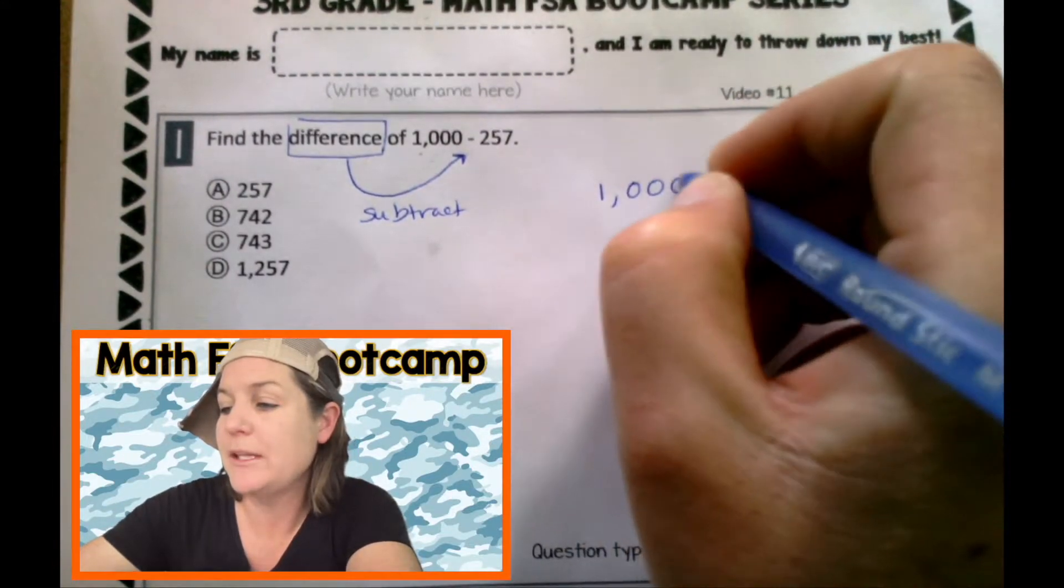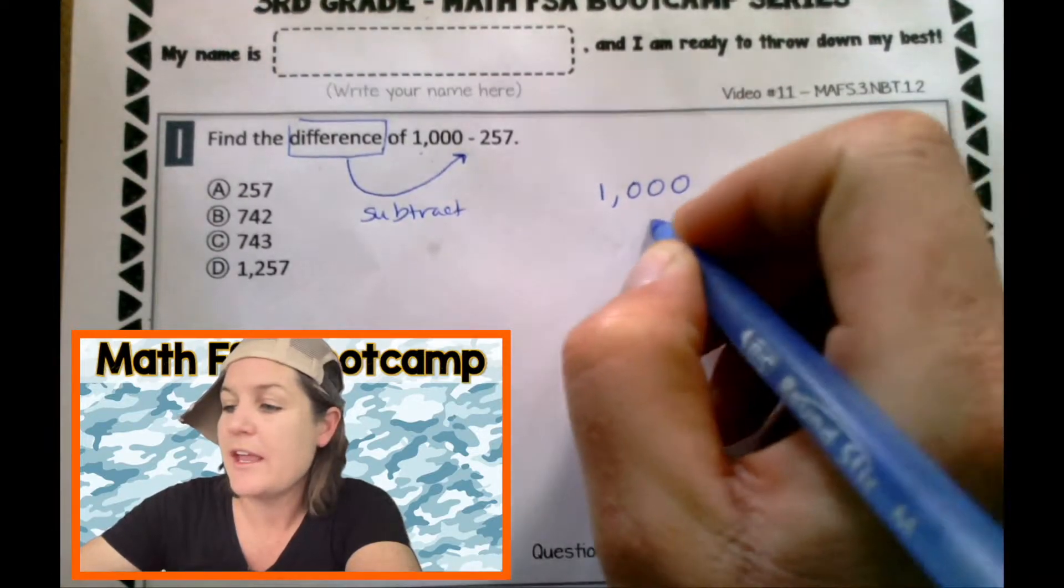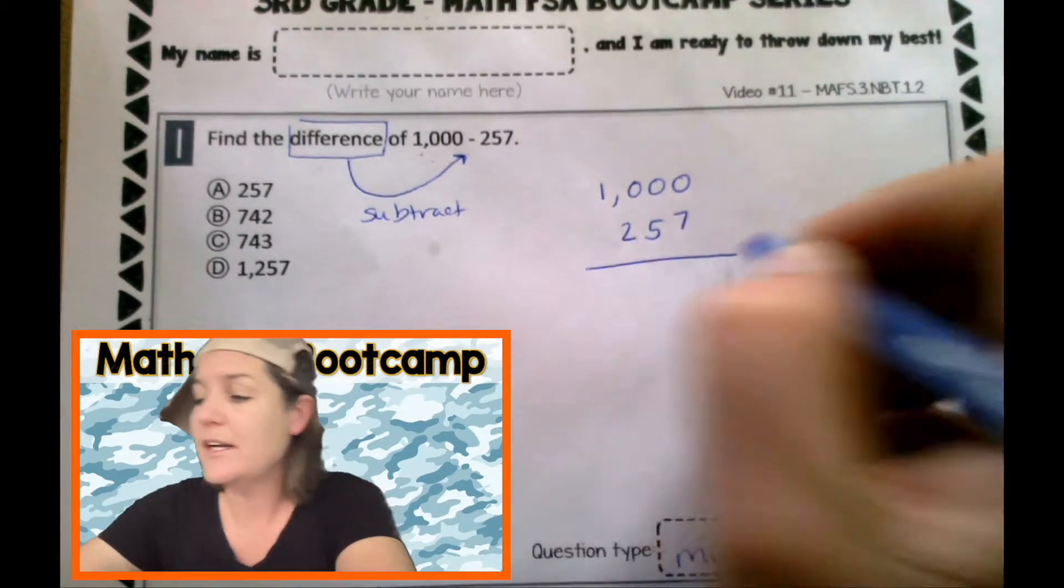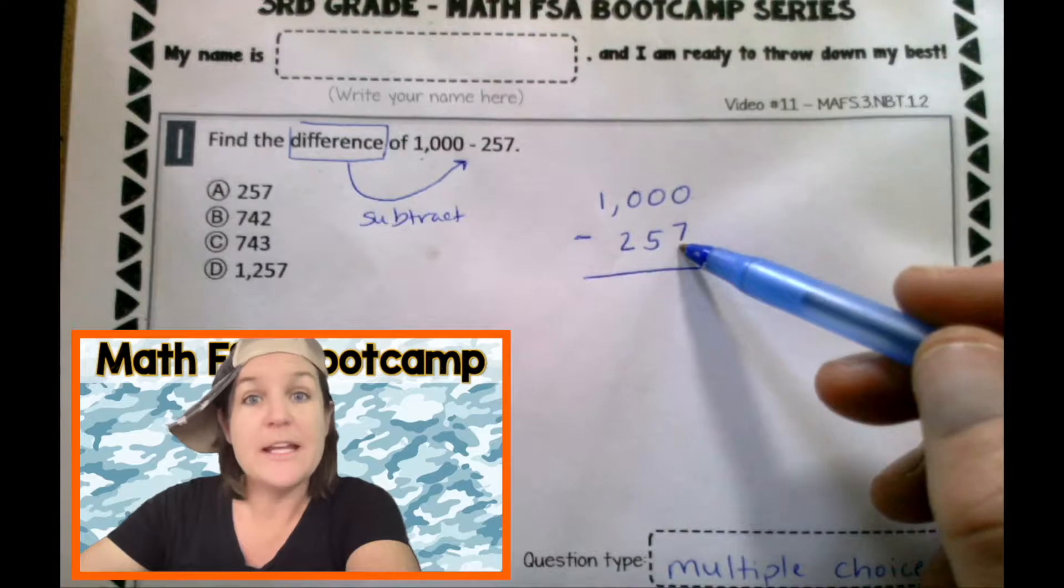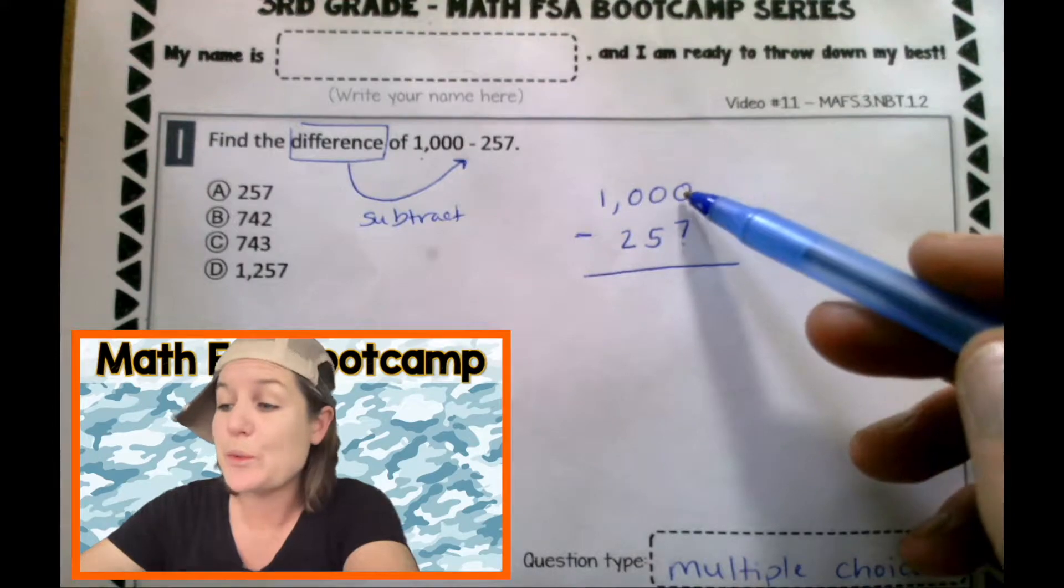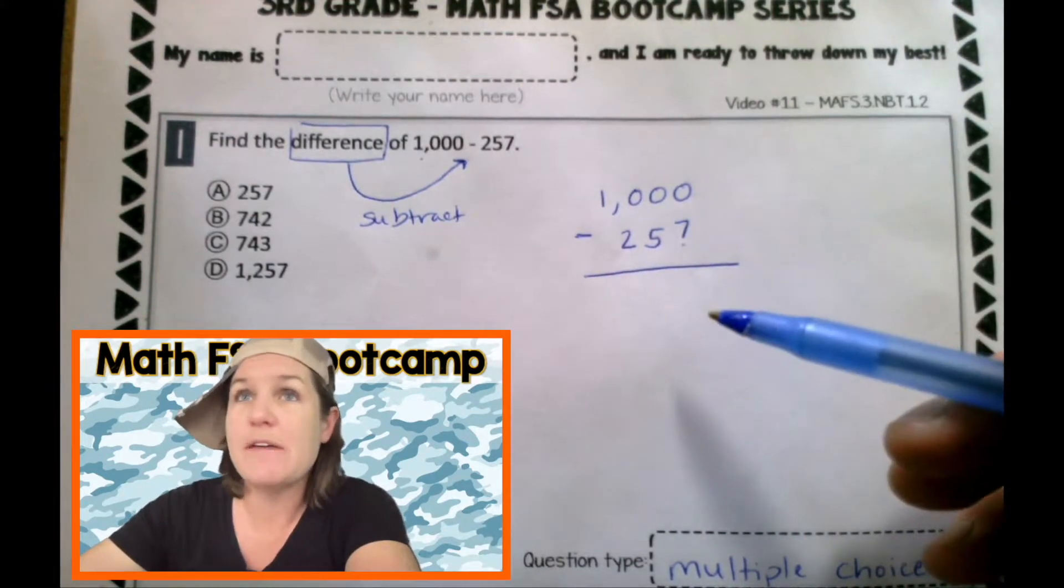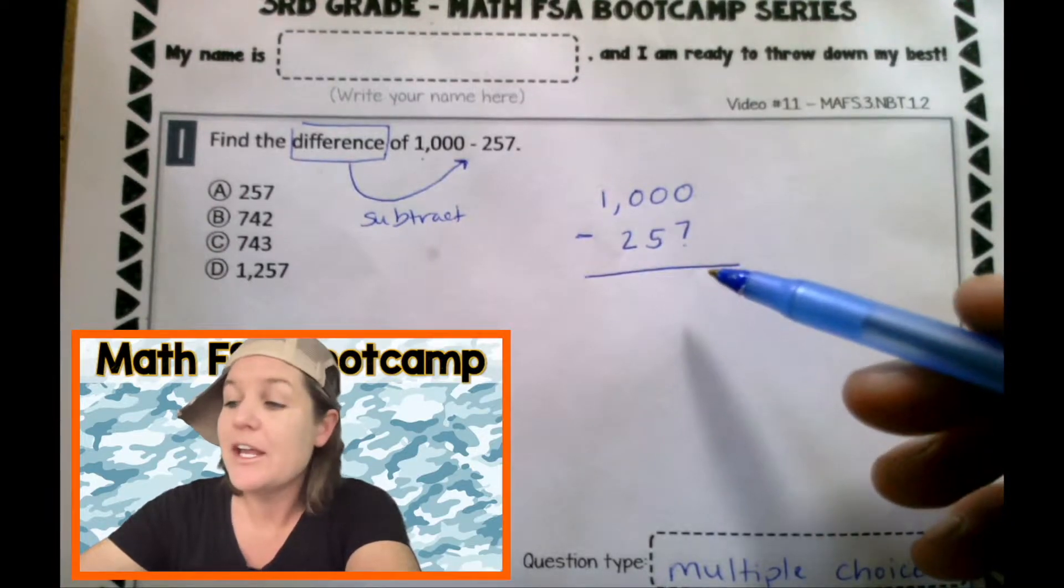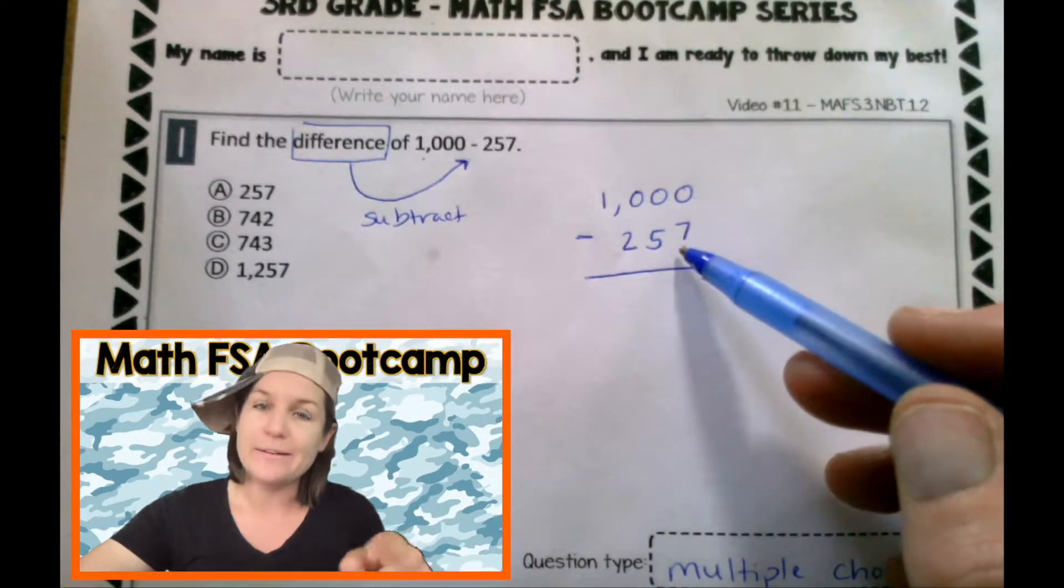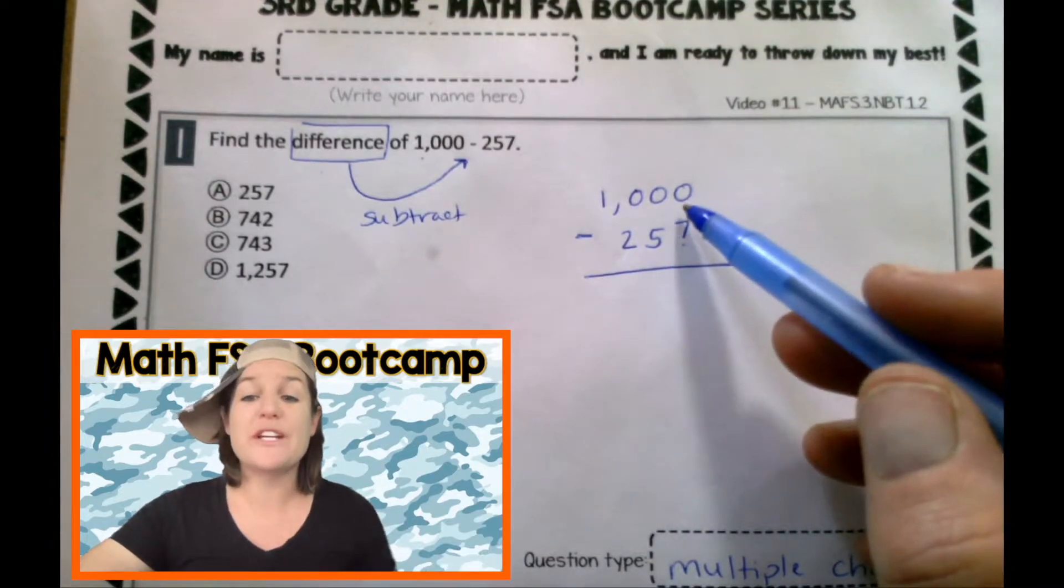So let's subtract them. We need to line up our places. So I've got a seven in the ones place, a five in the tens place, and a two in the hundreds place. All right. So now zero minus seven is not seven. A lot of third graders will make this mistake and they'll say, zero minus seven. Well, seven minus zero is seven. So it must be seven, right? And I'm like, nope, it's not. Because if you have zero of something, you cannot take away seven. Well, you can, but that doesn't come until sixth grade.